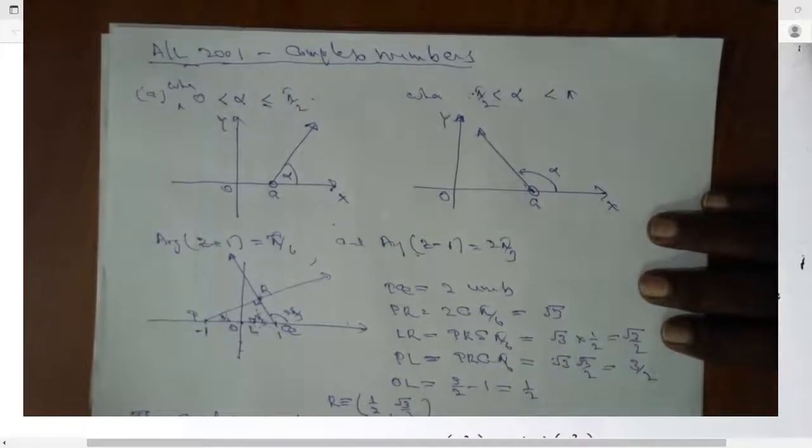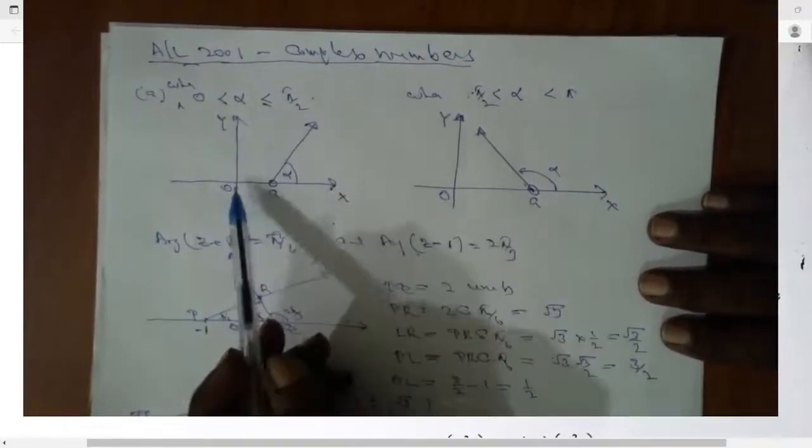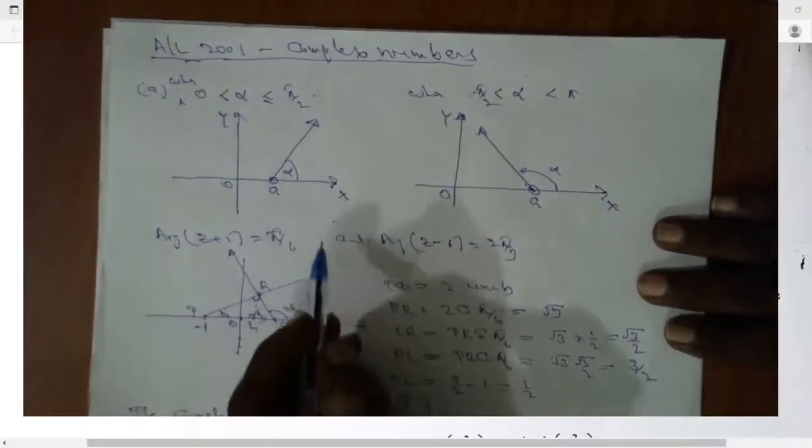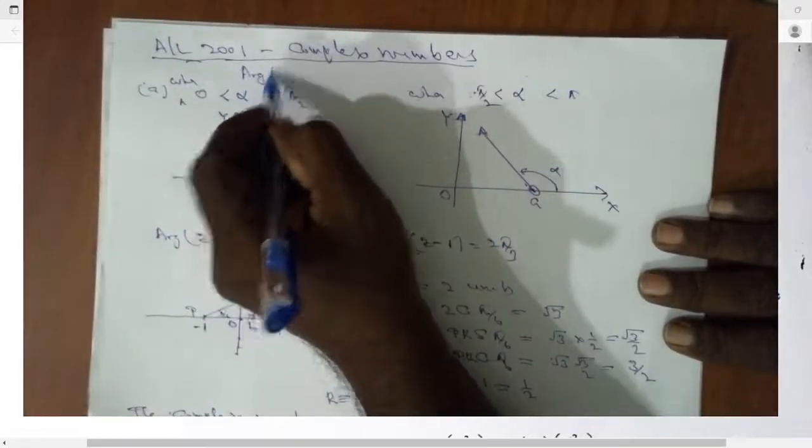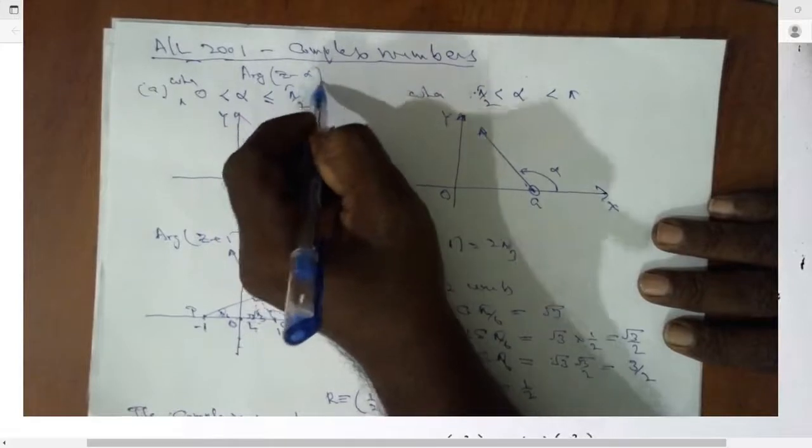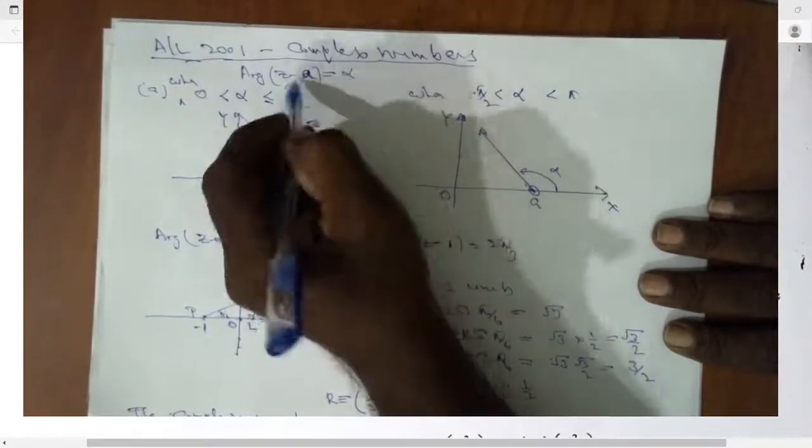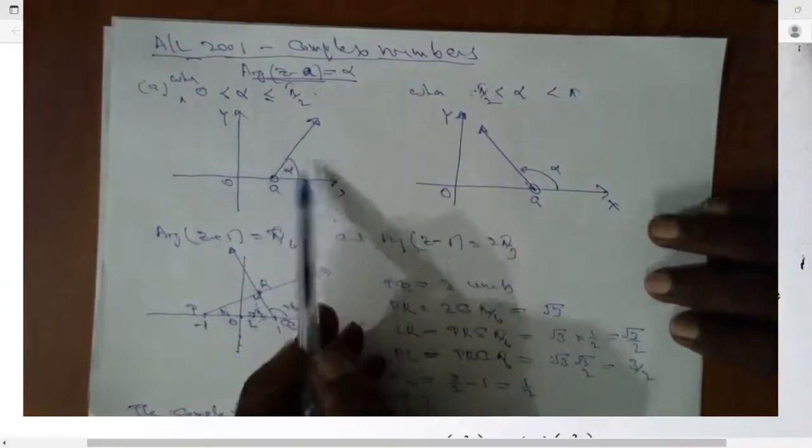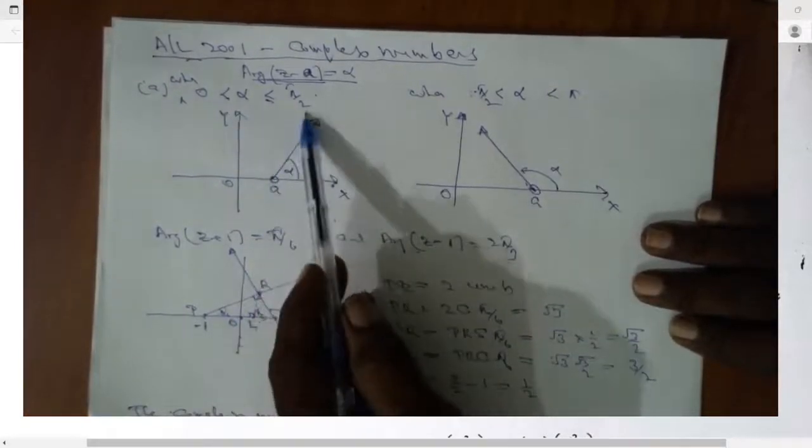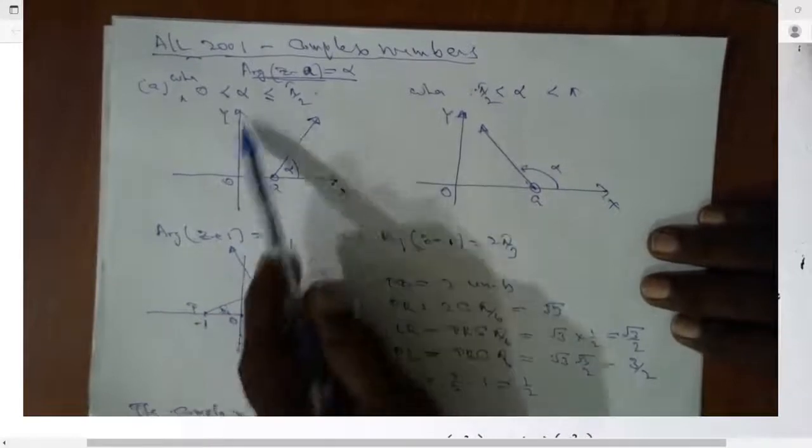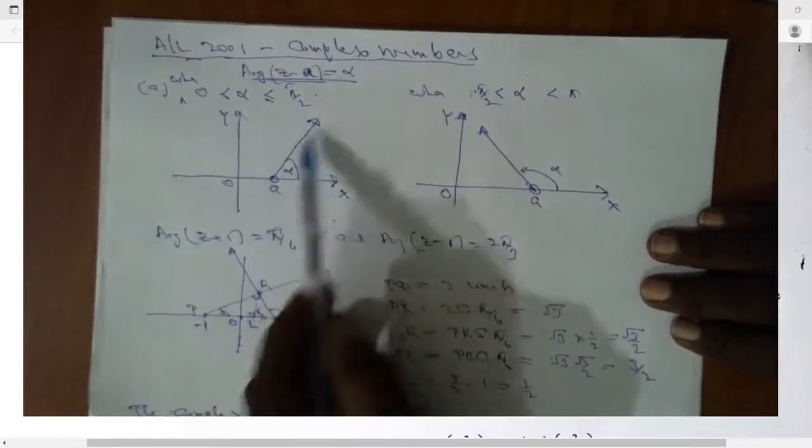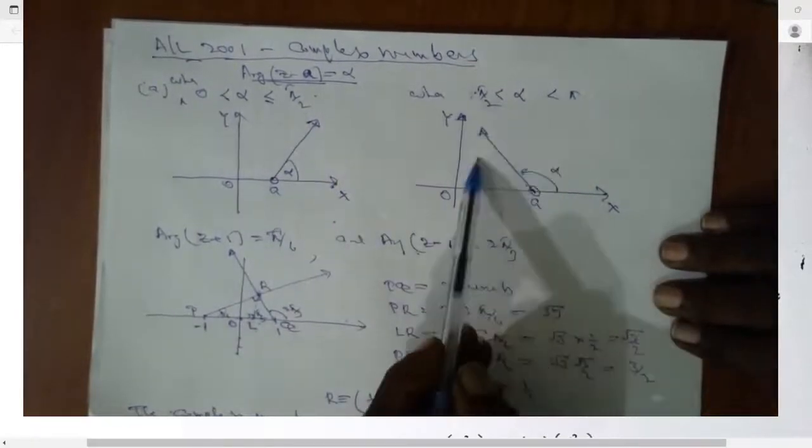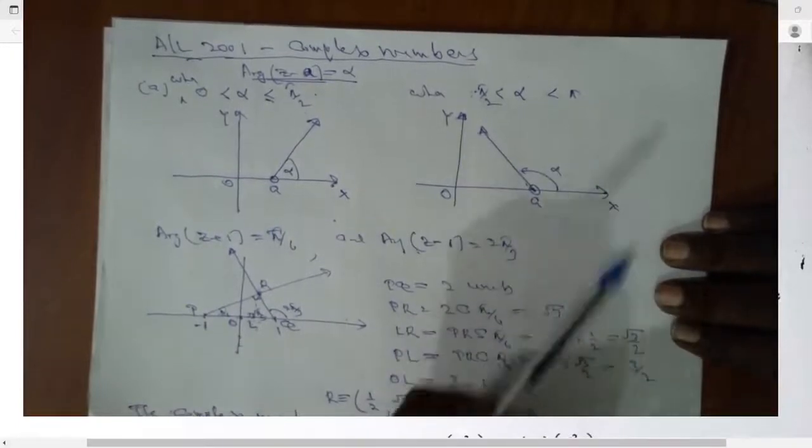Now if you look at part A, you have to define the line arg(z minus A) equals alpha. This line can be defined under two cases: when alpha is acute angle and when alpha is obtuse angle. When alpha is acute angle, you can define this half line like this. If alpha is obtuse angle, you can define this half line like this.